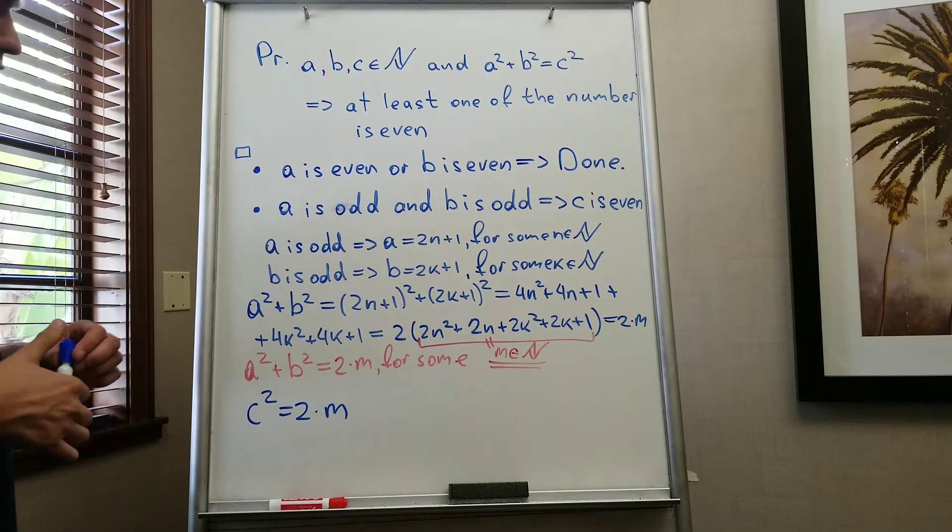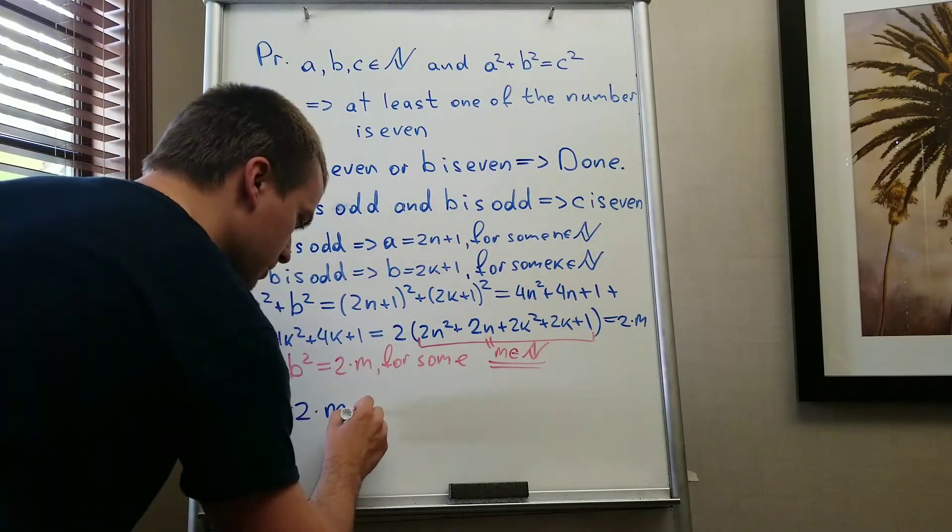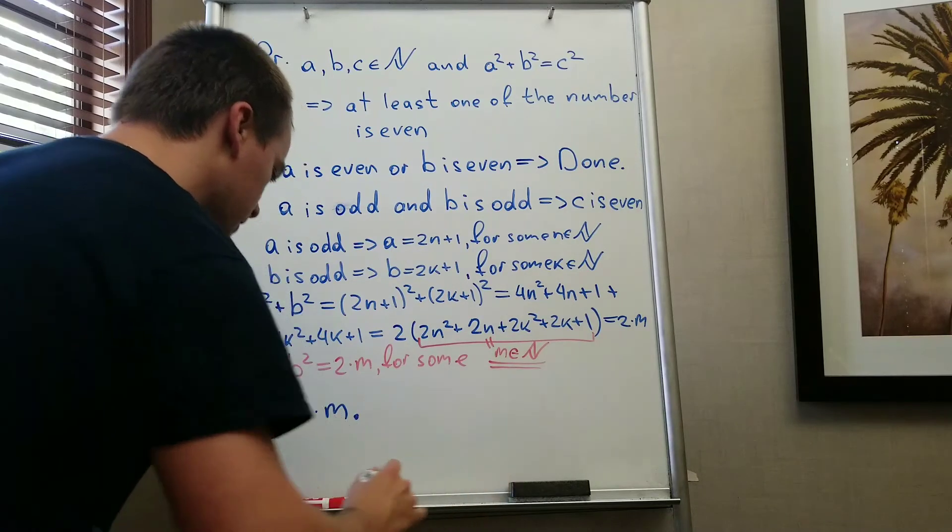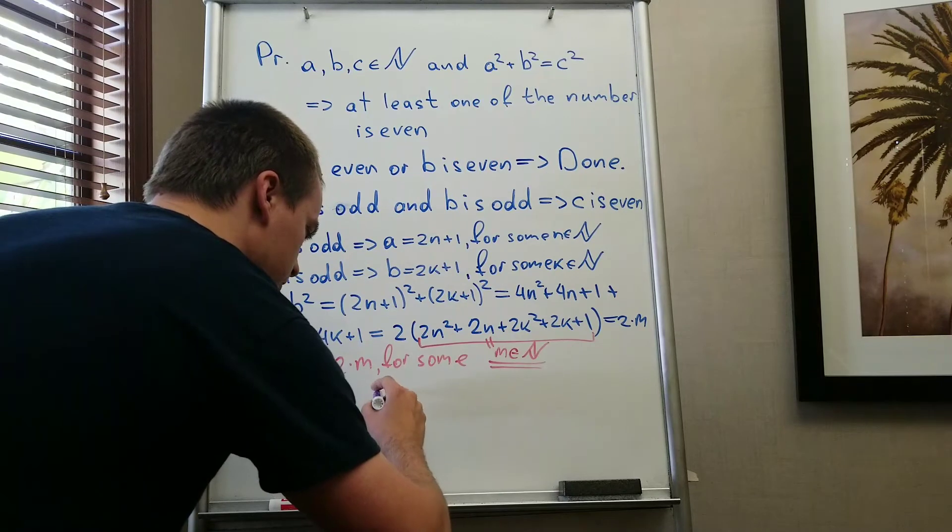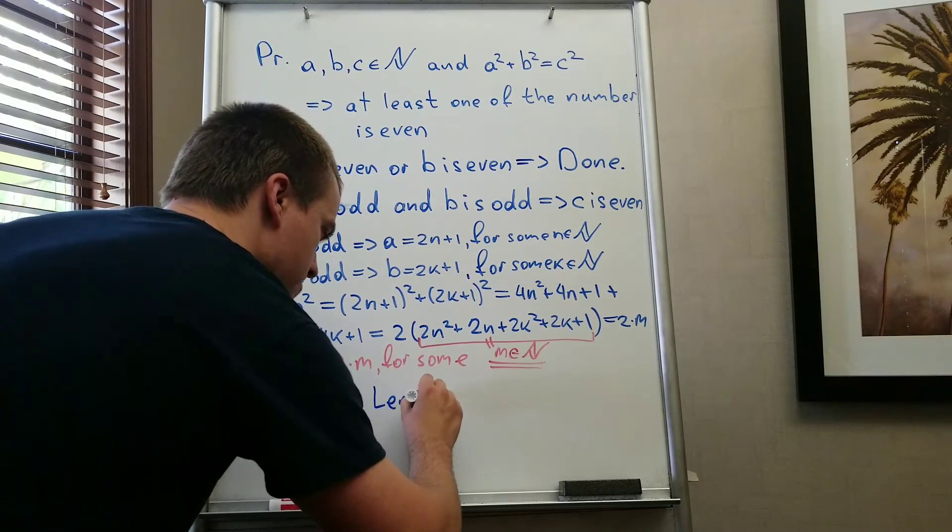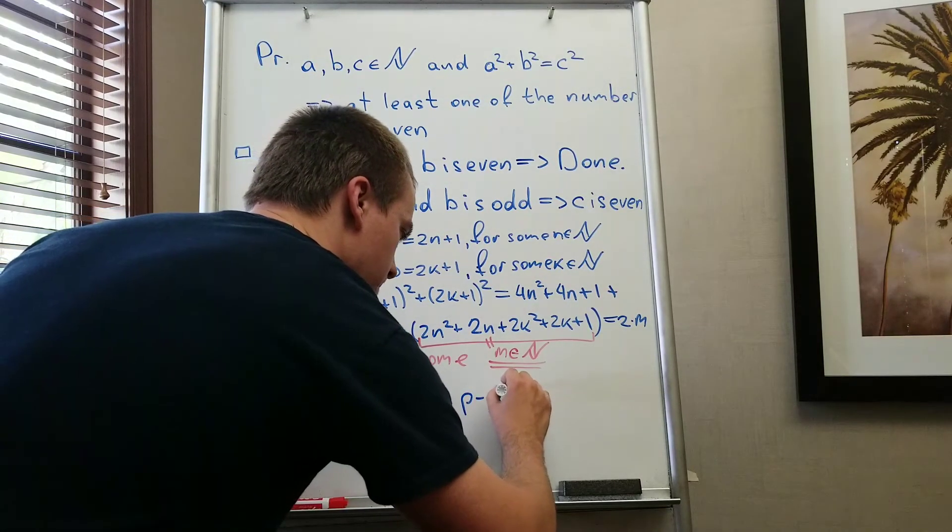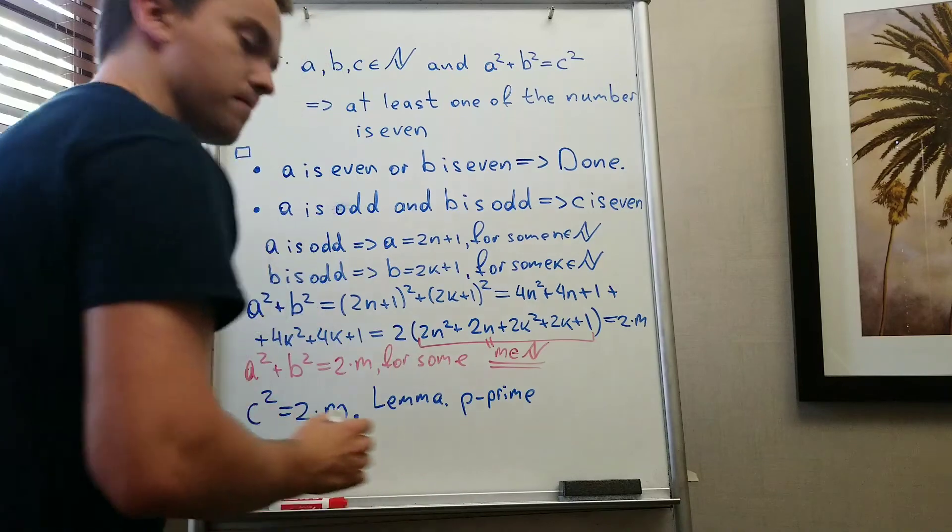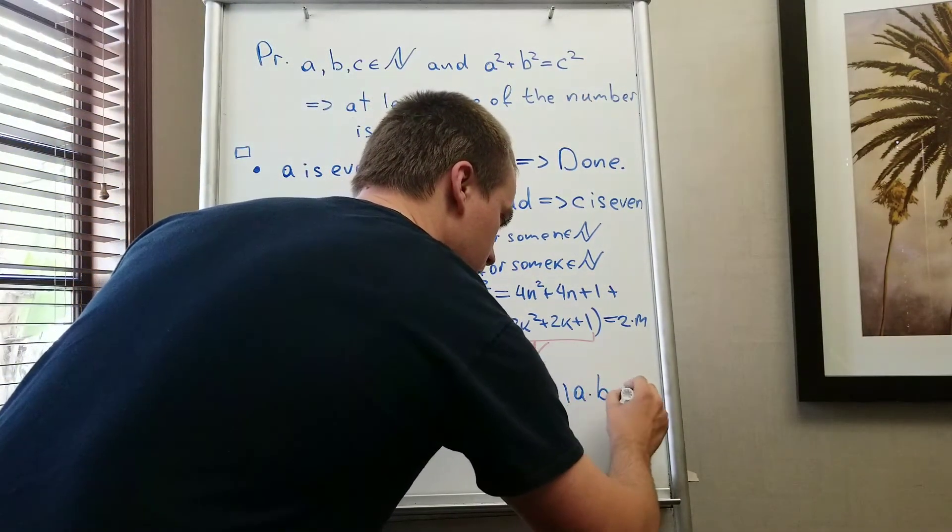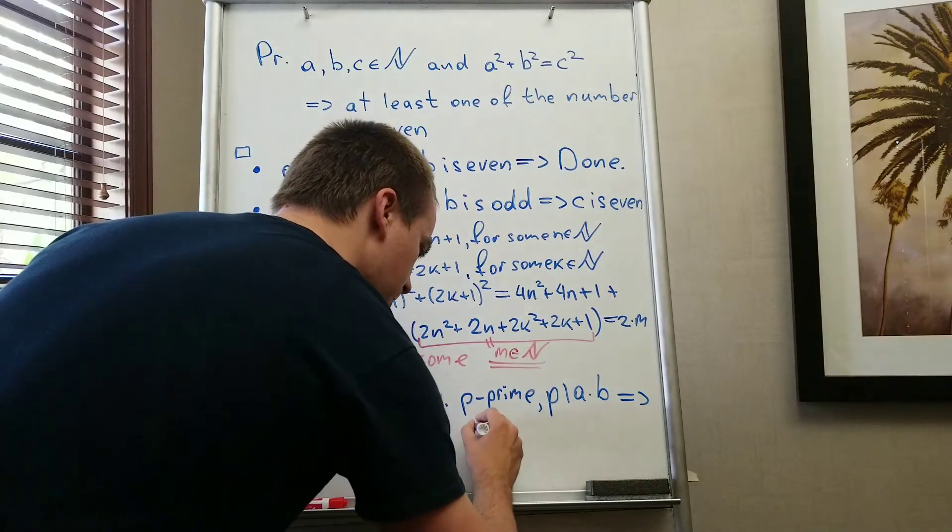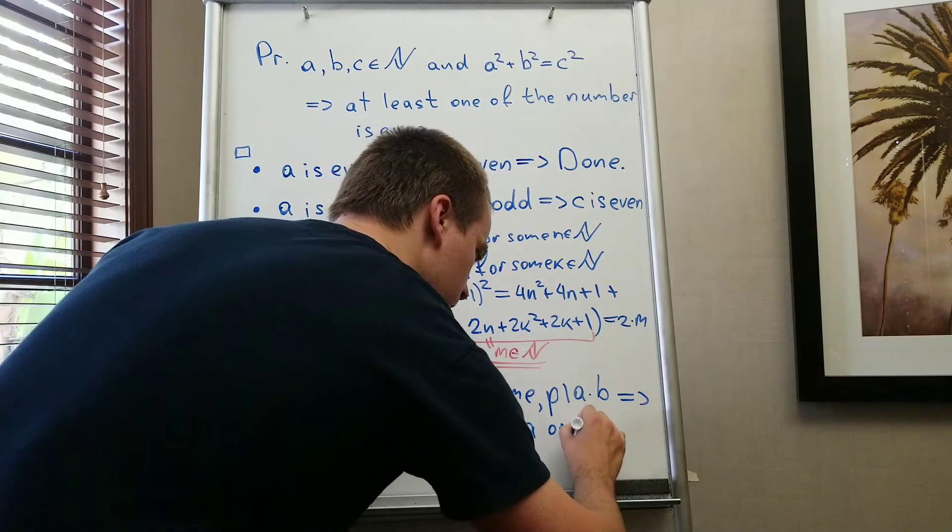And actually I think I need to prove this in another video, but we have some proposition, theorem. This proposition, like from number theory we know that, let's say small lemma, we know that if p is prime number and p divides a times b,